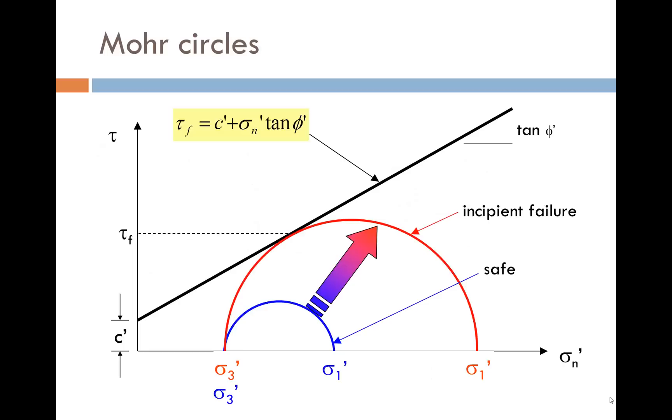Once we know the values of sigma 1 dash and sigma 3 dash, we can represent this state of stress by a Mohr circle as shown. The blue circle is comfortably below the Mohr Coulomb failure envelope, so it represents a safe state. However, if sigma 1 dash is increased sufficiently, you can see that the red circle is reached, which means that under those combination of stresses, the soil will be on the point of failure. This is obviously an unsafe state.